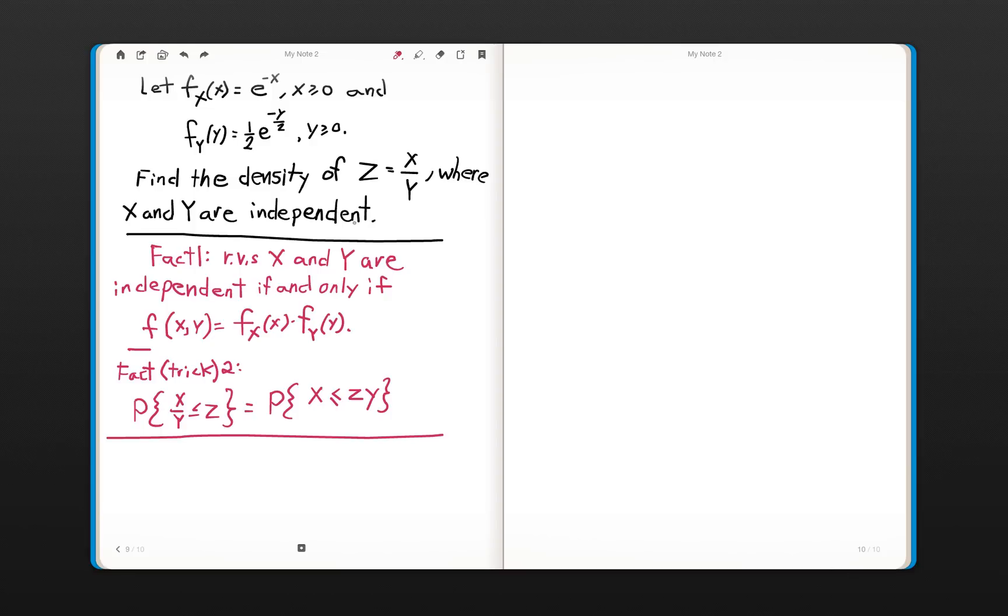But before we go there, I'm going to talk about fact one, and this is something you most certainly should know. So if you have two random variables, given their respective densities here, then if they're independent, then you can actually just find the joint density very simply by just multiplying the two densities.